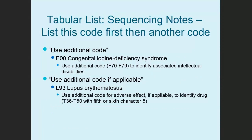Other notes indicate the current code is listed first, then another code follows. 'Use additional code' — but only if documented; don't add a code if there's no documentation. For example, E00, congenital iodine deficiency syndrome, has a note: use additional code to identify associated intellectual disabilities — E00 is first, the intellectual disability code is second. Under L93, lupus erythematosus, there's a note to use additional code for adverse effect if applicable to identify the drug — L93 is first, the drug code is second.